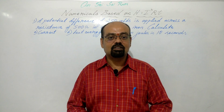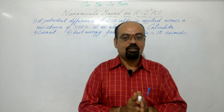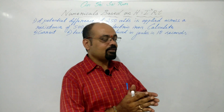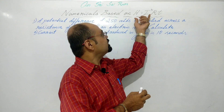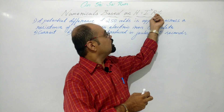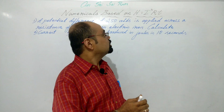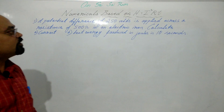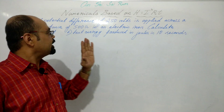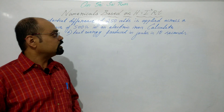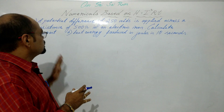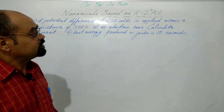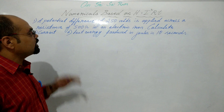Moving on to numericals based on Joule's law of heating effect. We have derived the formula: heat H = I²RT. The first numerical: a potential difference of 250 volts is applied across a resistance of 500 ohms in an electric iron. Calculate the current and heat energy produced in joules in 10 seconds.